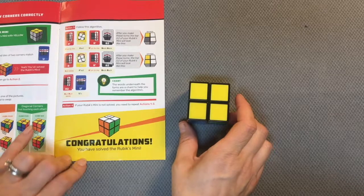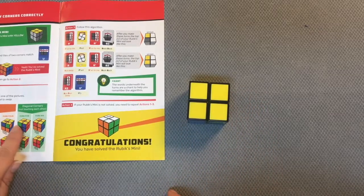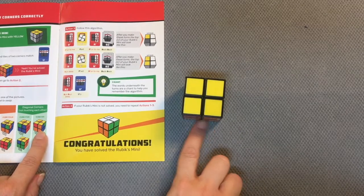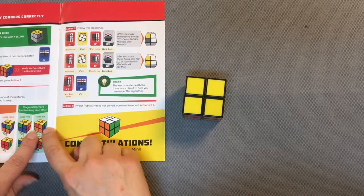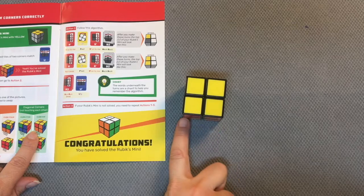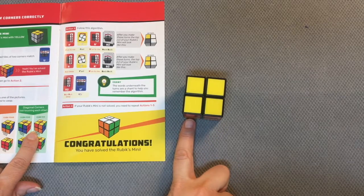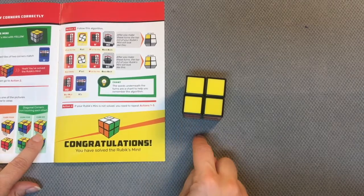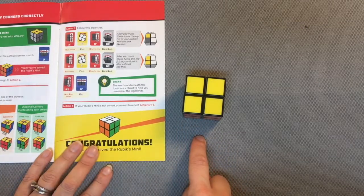So what I need to do is my front face needs to be an L that goes to the left, like that. I've got the orange, it's actually a backwards L. But I need to make sure that my front face is the correct face for this algorithm to work.